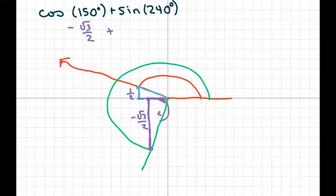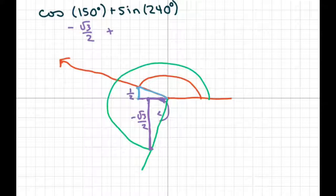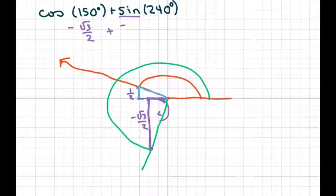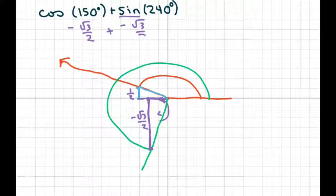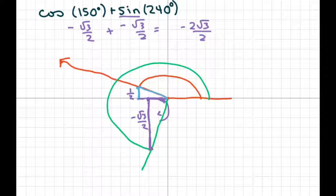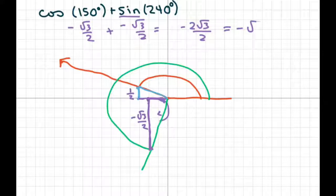The x would be negative one half, but we don't need to know that. We just need to know our sine, which is your vertical part. So that's going to be minus square root of three over two. So that's going to be minus two square root of three over two, because there's two of them. You cancel out the twos, and you're just going to get negative square root of three.